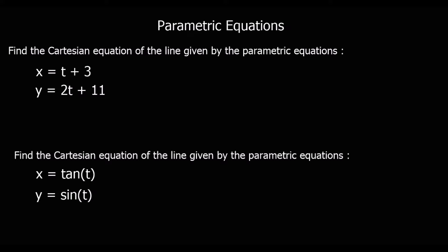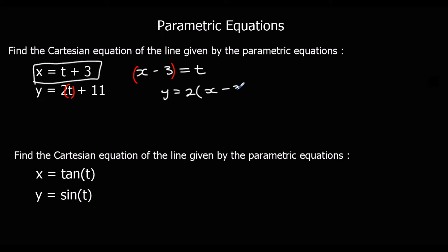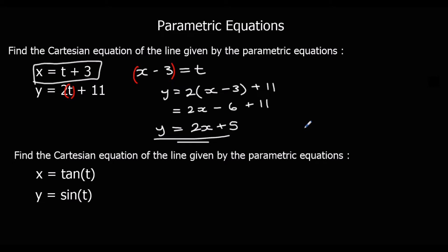For the example x = t + 3 and y = 2t + 11, we make the first equation equal to t: subtracting 3 from both sides gives t = x − 3. Substituting into the second equation: y = 2(x − 3) + 11. Expanding: y = 2x − 6 + 11, so the Cartesian equation is y = 2x + 5.